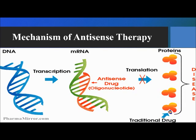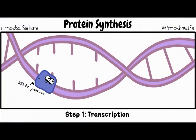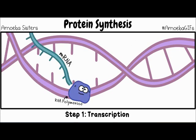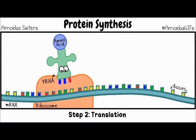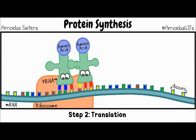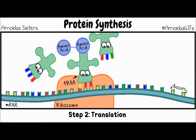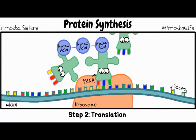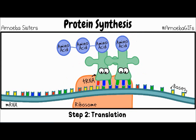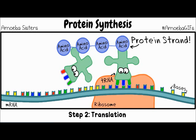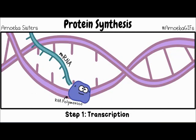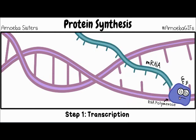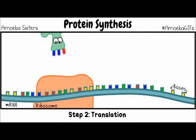To understand how the antisense drug works, we will first briefly recall how proteins are made. The process of making a protein, good or bad, begins with the cell making a copy of its DNA. This single-strand copy of DNA is called messenger RNA. The messenger RNA then travels outside the nucleus to the part of the cell where proteins are made.